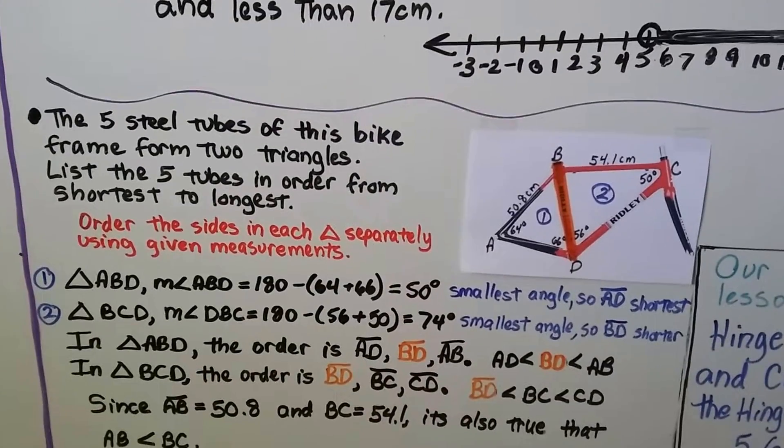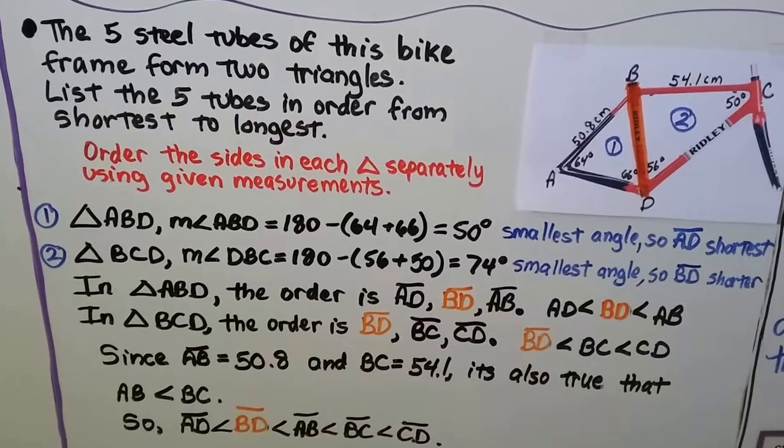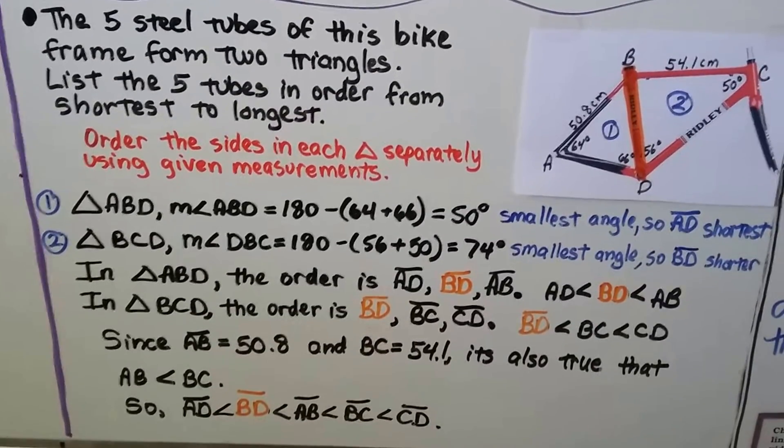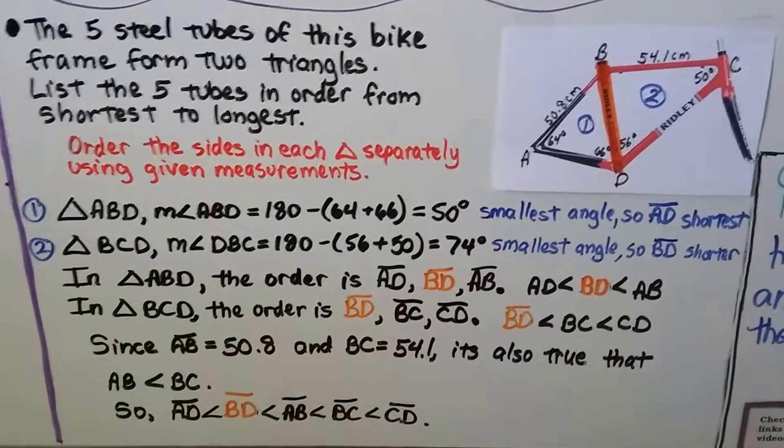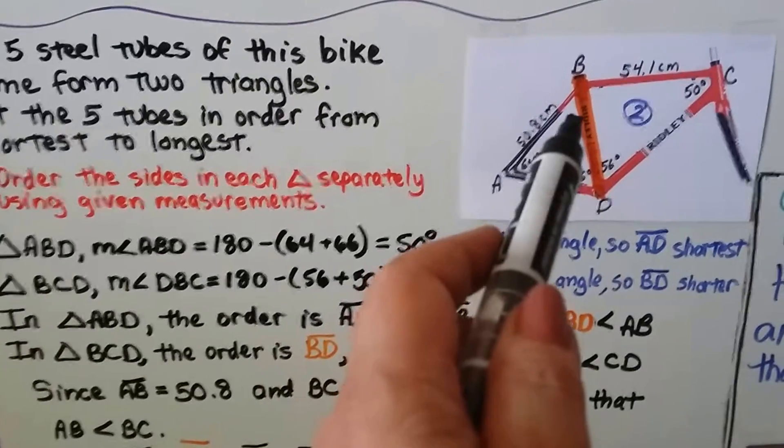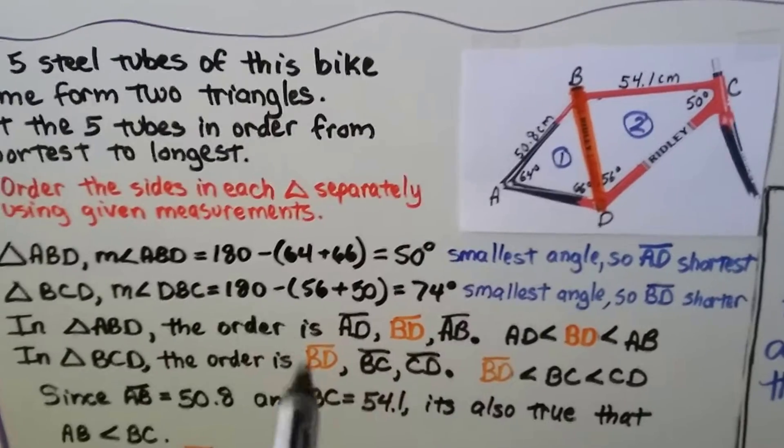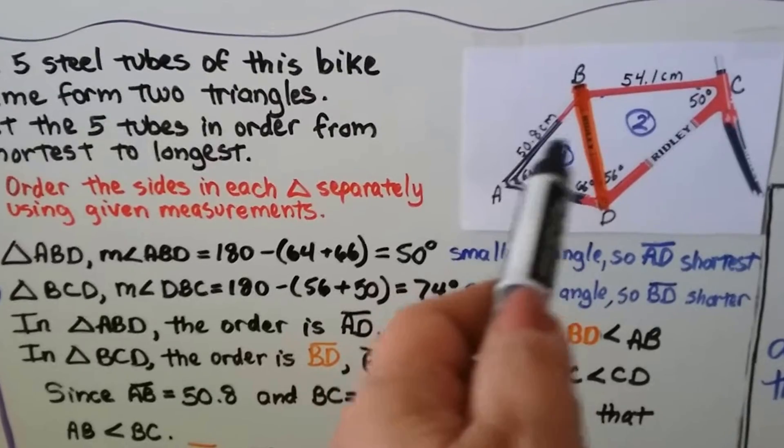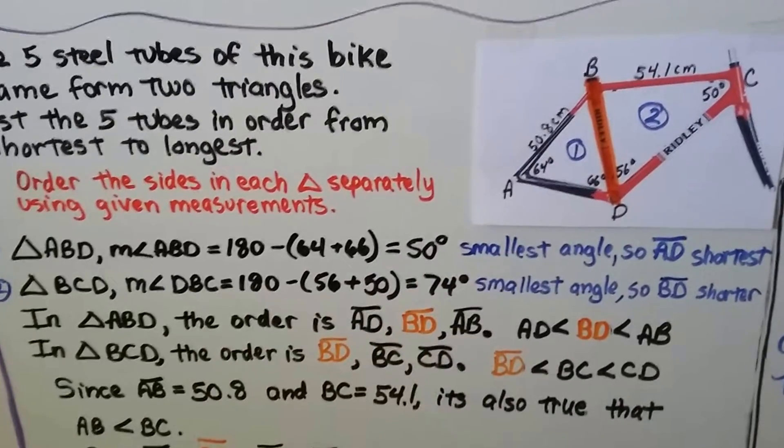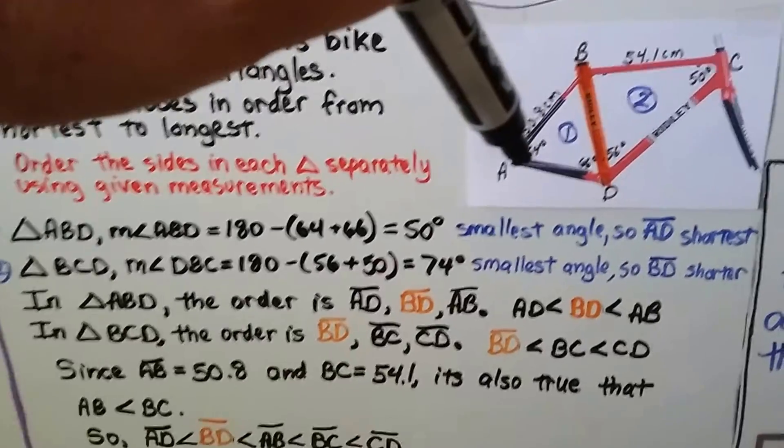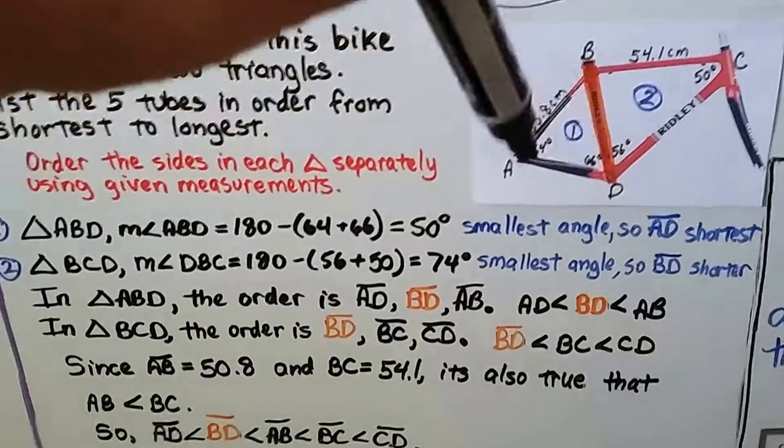We need to list the five tubes in order from shortest to longest. We can order the sides in each triangle separately using the given measurements. For triangle ABD, we know the measure of angle ABD is missing. Because of the triangle sum theorem, the whole thing needs to total 180 degrees inside. So we can do 180 minus 64 plus 66, and that is 50 degrees. Because that's 50 degrees, that's bigger at 64, that's bigger at 66, this is the smallest angle, so that's the smallest side, AD. That's the shortest side.